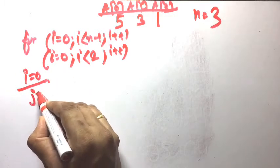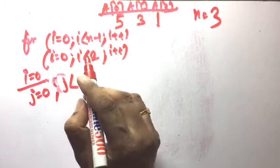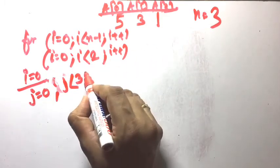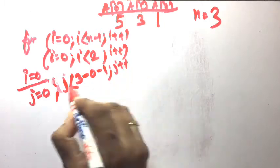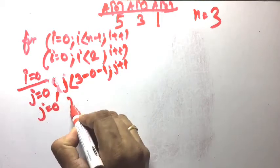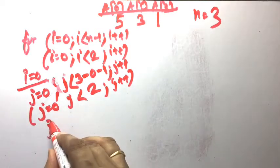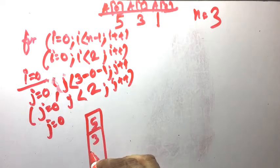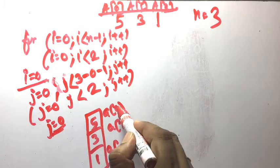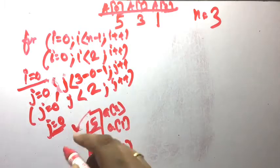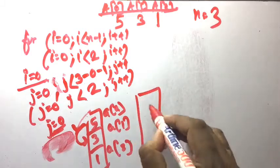For the j loop: j less than n minus 1 minus i. When i equals 0, that is 3 minus 1 equals 2, so j less than 2, j plus plus. When j equals 0, compare a[j] and a[j+1]: a[0] is 5 and a[1] is 3. Since 5 greater than 3, yes — swap with the help of temp. After swapping we get 3, 5, 1.